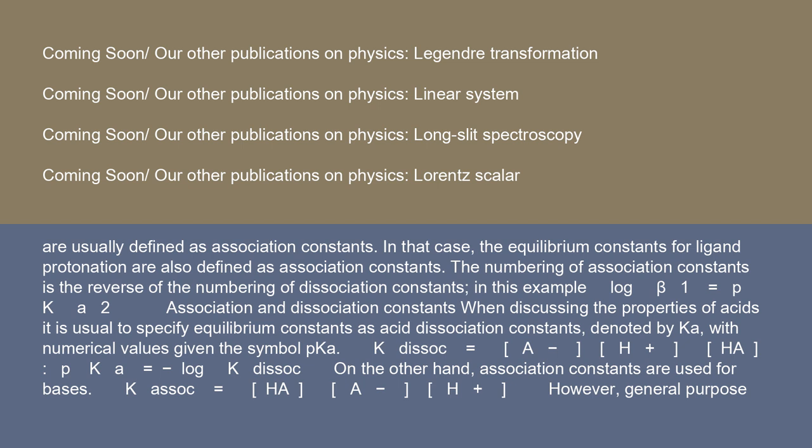On the other hand, association constants are used for bases: K_assoc = [HA]/([A⁻][H⁺]). However, general-purpose computer programs that are used to derive equilibrium constant values from experimental data use association constants for both acids and bases.